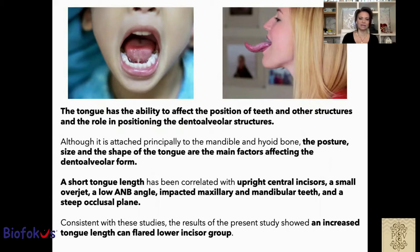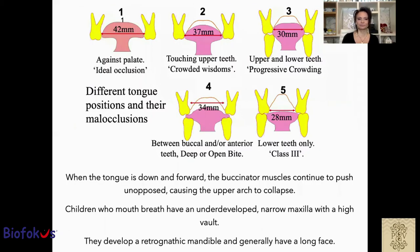Consistent with these studies, the results of the present study showed an increased tongue length that can flatten the lower incisor group. Different tongue positions and their narrow occlusion are very related to the size of the upper arch and the intercanine width. When the tongue is down and forward due to lack of space in the mouth, the buccinator muscle continues to push, causing the upper arch to collapse. For example, children who have an undeveloped narrow maxilla with a high vault can develop a retrognathic mandible and generally have a very long face.